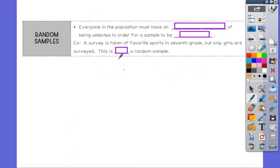Random sampling is everyone in the population must have an equal chance of being selected in order for a sample to be random. Basically everyone has to have a fair shot. I can't take a poll of this class and just ask the girls what they want for a snack or a prize. That wouldn't be fair to not ask the boys opinion as well.